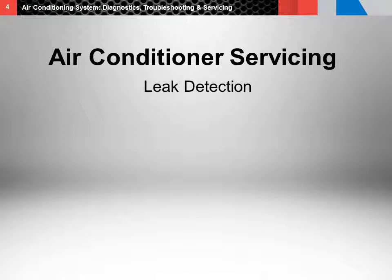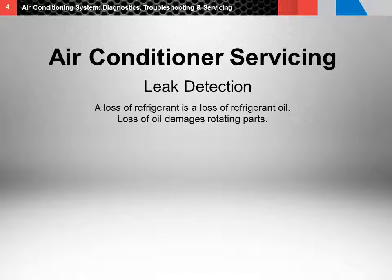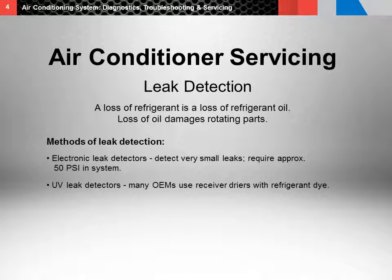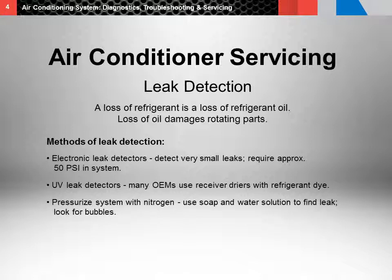Refrigerant leaks are one of the most frequent repairs made to an air conditioning system. A leaking air conditioning system will cause catastrophic damage if not repaired in a timely manner. In an R134A system, refrigerant and refrigerant oil mix and travel continuously through the system — a loss of refrigerant is a loss of refrigerant oil, which will eventually damage rotating parts. Proper leak detection equipment is necessary. Recommended methods include electronic leak detectors, which can detect very small leaks and require approximately 50 PSI in the system; UV leak detectors; receiver dryers with refrigerant dye meeting EPA J2297 standards; pressurizing the system with nitrogen using a soap and water solution (leaks identified by bubbles); and vacuuming the leak down during evacuation.